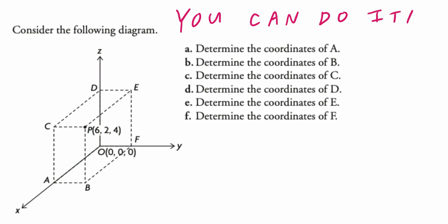Now, in the first part, determine the coordinates of A. A must be (6, 0, 0). So again, this point right here: (6, 0, 0).